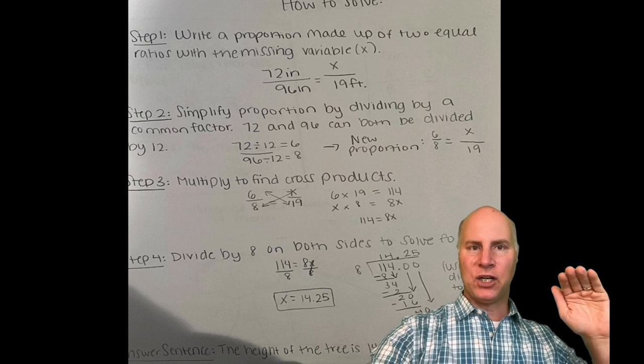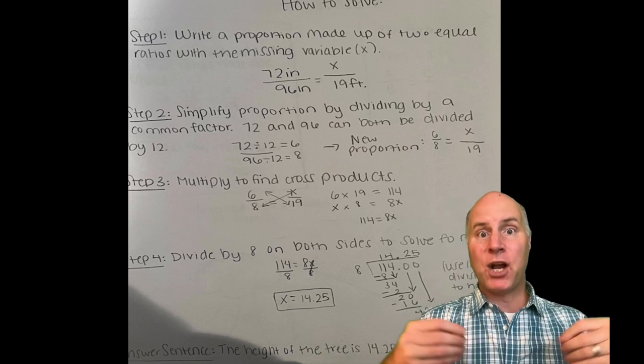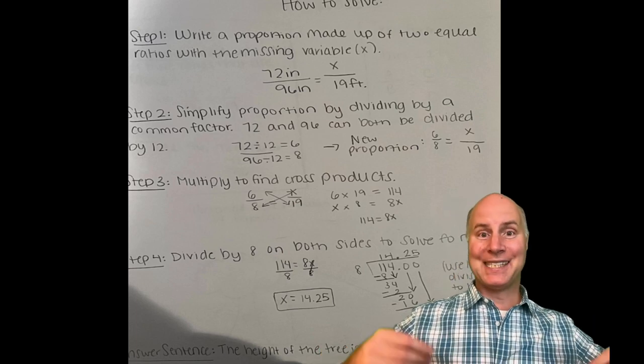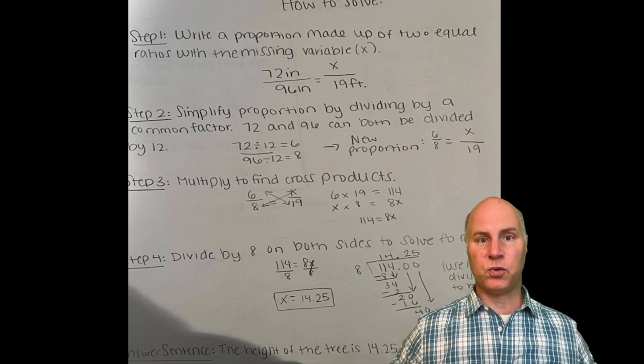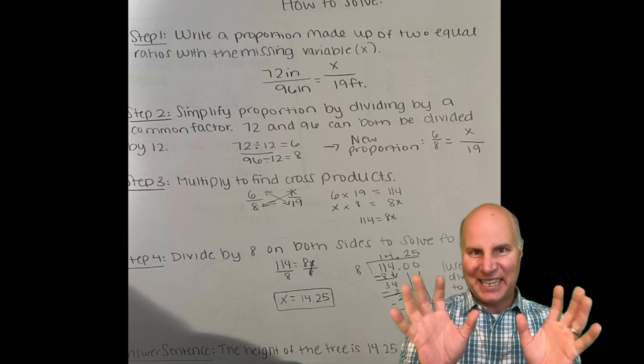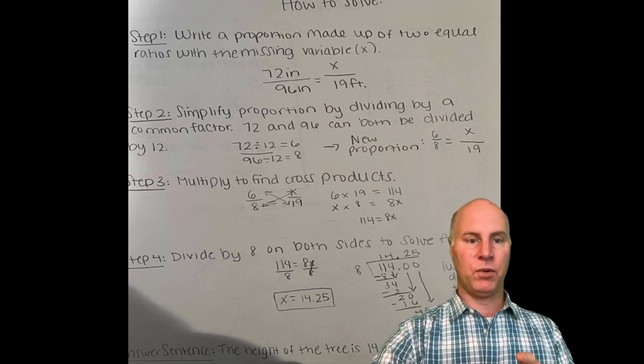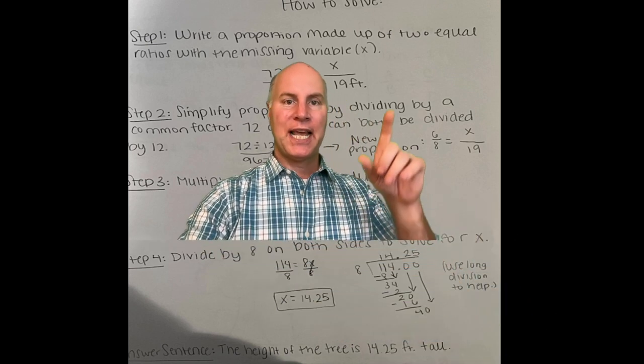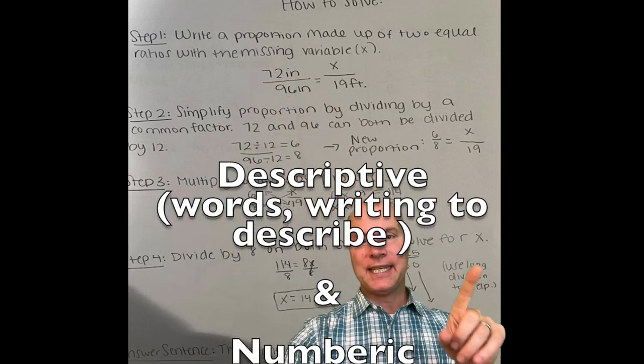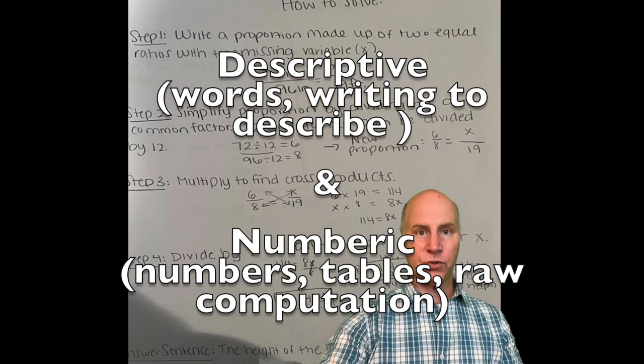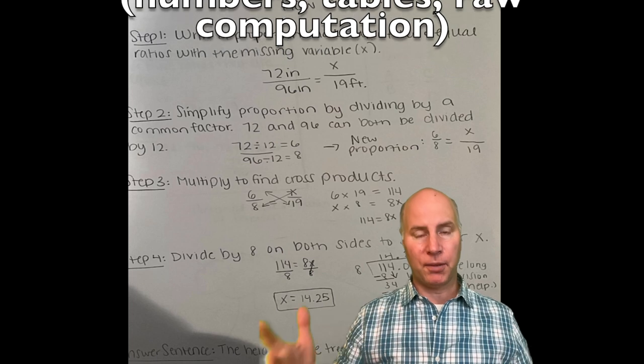We see that there's a direction that she's giving, a direction written that the step is written in imperative voice. So she's saying step one, write a proportion made up of two equal ratios with a missing variable. So she has that language piece and then she also includes, let me point over here, she has the language sentence and then she shows her work. And we want to see both those things. You want to include language as well as computation. Language, computation.